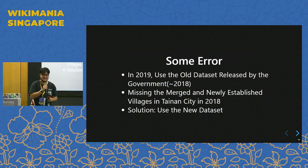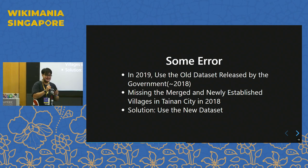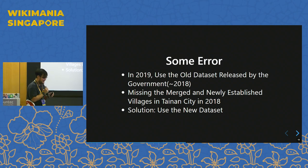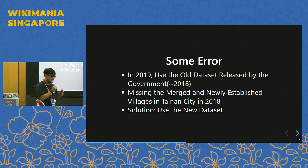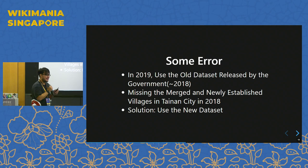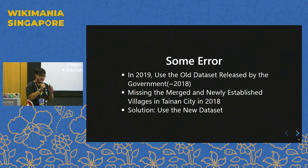We do have some errors because we are humans and each person has a different opinion and different way of doing things. The most major error is some people importing villages to Wikidata used an old dataset — it was only maintained until 2018, and we were doing the import in 2019. So we were missing some merged or newly established villages in certain cities done in 2018.